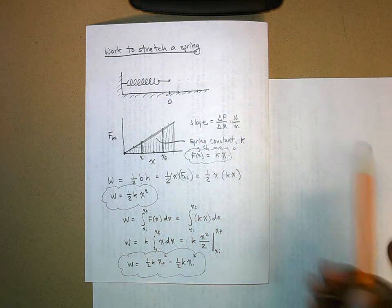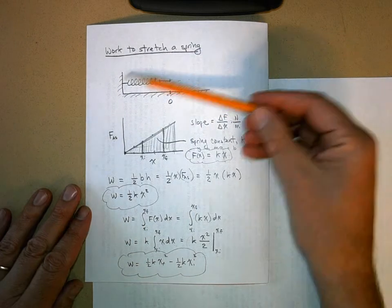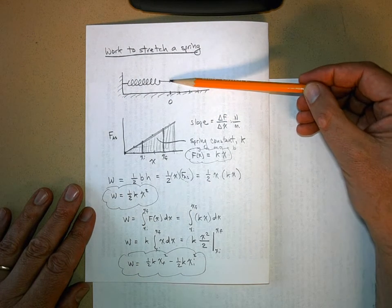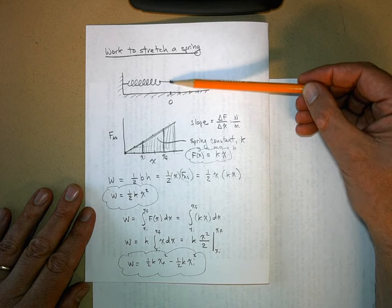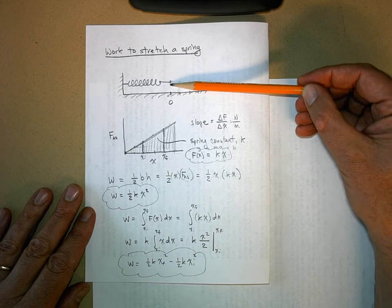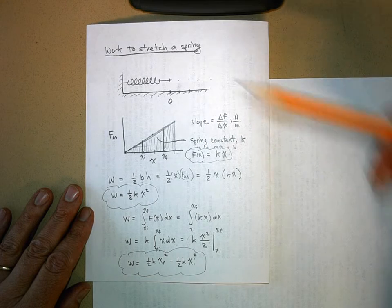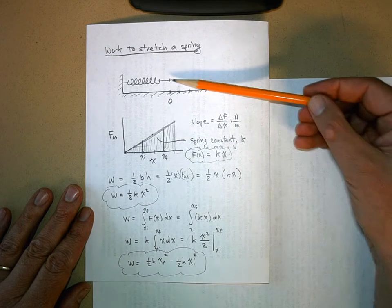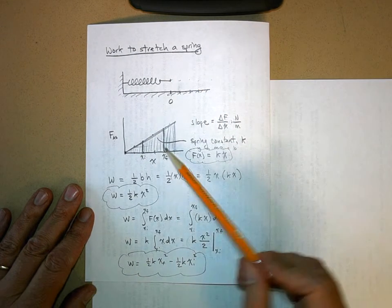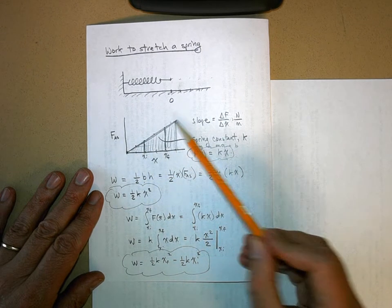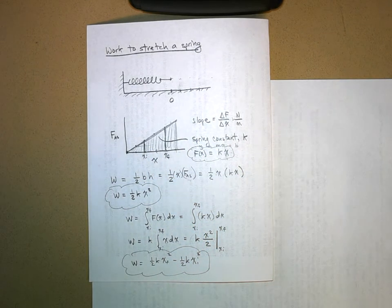Okay, just to quickly review what we just talked about. If you have a spring that's at its relaxed position, that is, it's not applying any force, it's not stretched or compressed at all, and then you stretch it out, the force you need to apply to the spring to make it stretch creates a straight line like this, for most springs in most situations.